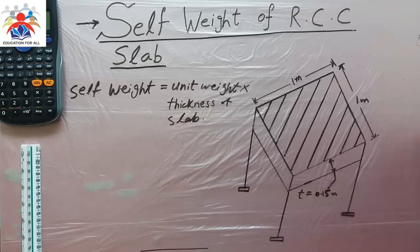What is the unit weight of an RCC slab? The unit weight of RCC slab is 2400 kilograms per cubic meter. In our case, we have a 1 by 1 square meter slab and the thickness is 0.15 meters.